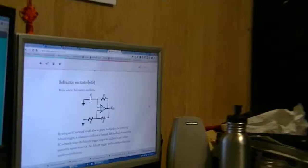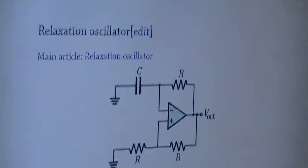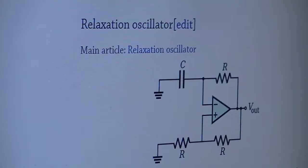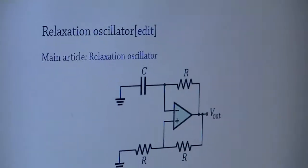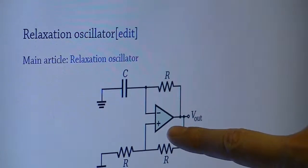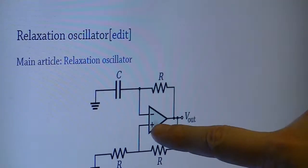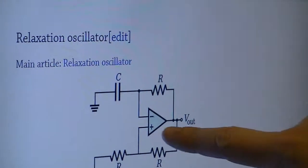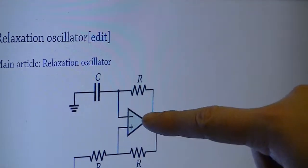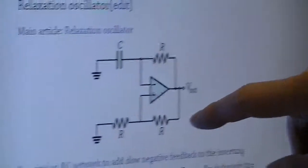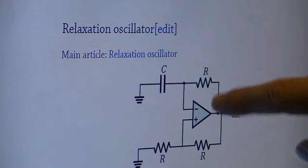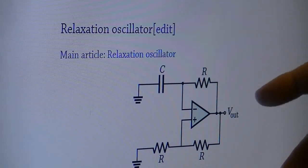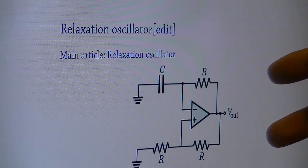One of the circuits I've been trying to build is called a relaxation oscillator — a very, very simple circuit. That is the symbol for the op amp for those that don't know. As you can see, there are two inputs represented by plus and minus signs and one output. There's also power going to it, which is sometimes represented by lines coming out of the top and bottom of the triangle, but they're often left out for simplicity's sake.